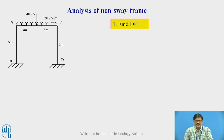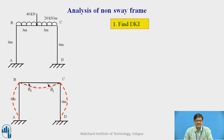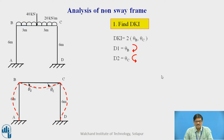The first step is to find the degree of kinematic indeterminacy, for which we need to assume the deformed shape. The frame is likely to deform as shown by the red dotted line, where rotation is possible at B and at C. Therefore, the degree of kinematic indeterminacy is 2. We consider D1 as theta B (clockwise) and D2 as theta C (anticlockwise).